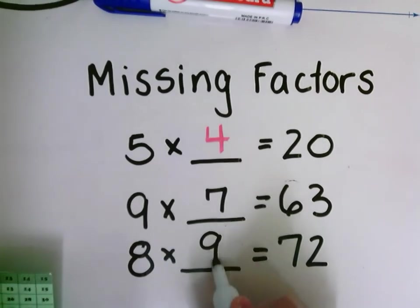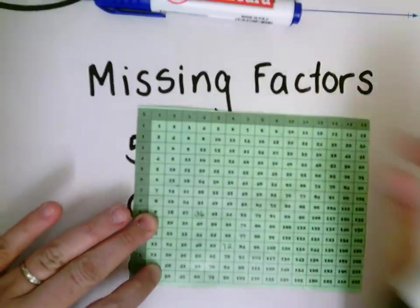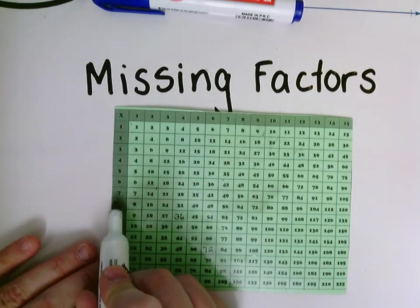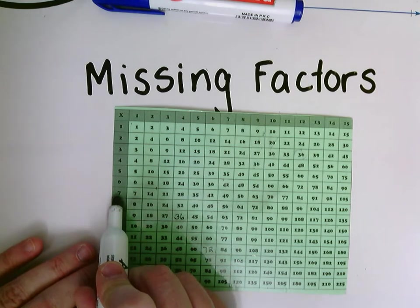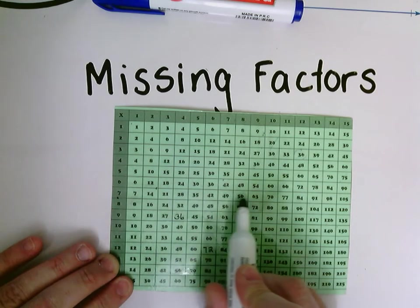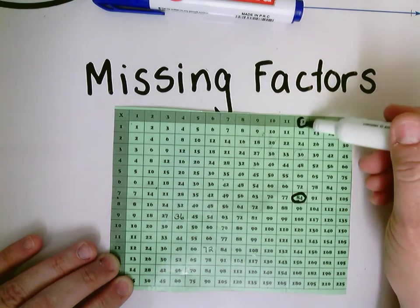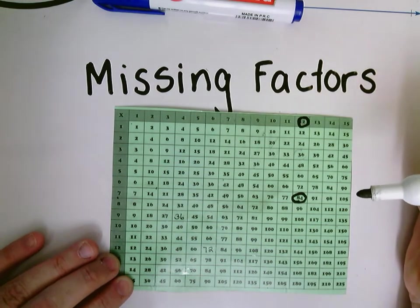I can do the same thing. What if I wanted to know what times seven is 84? I'm going to go across my seven until I hit 84, and then I'm going to look up to the top. Oh, it's 12. Seven times 12 is 84.